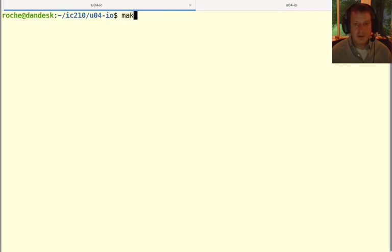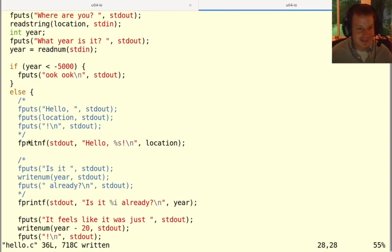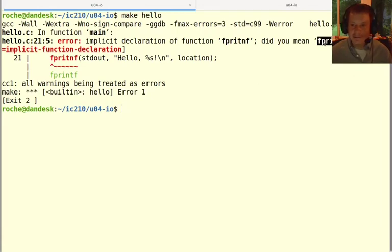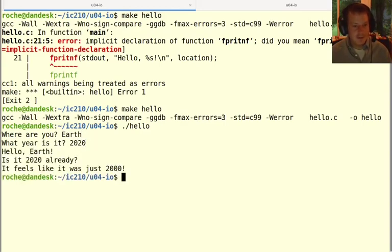Let's see this in action. So if I compile this, I misspelled fprintf. So that's a good thing to get right. That's a nice little error message there. See, it even tells me what I meant to say. That's kind of a nice feature of the compiler. So now I can run it. Where am I? I'm on earth. And it is 2020. And there we go.